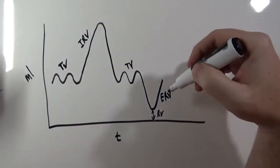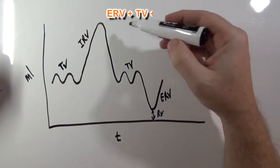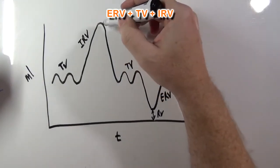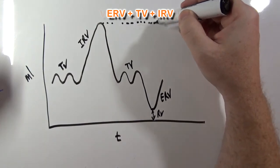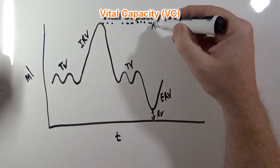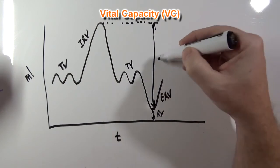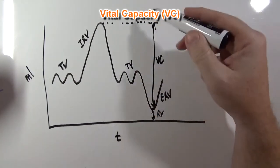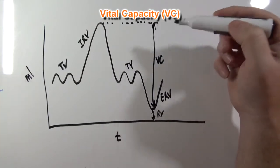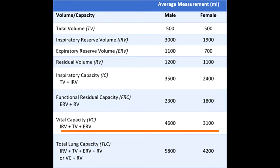If I were to take expiratory reserve volume plus tidal volume plus inspiratory reserve volume, I would get a capacity known as vital capacity. This is the maximum amount of air that we can move in and out of our lungs to keep us alive. The average vital capacity for a male is 4600 milliliters.